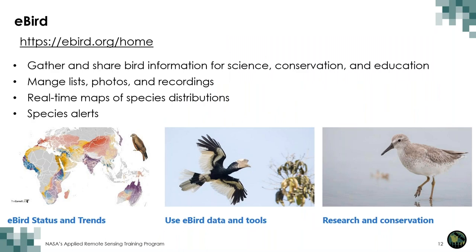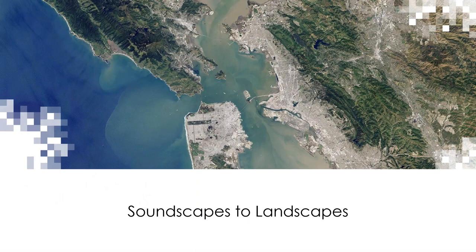eBird is among the world's largest biodiversity-related science projects, with more than 100 million bird sightings contributed annually by eBirders around the world. The goal is to gather and share bird information in the form of checklists and to provide power to new data-driven approaches to science, conservation, and education. You can also see videos and hear recordings of birds, see real-time maps of bird habitats, and subscribe to alerts when certain species have been seen. There are many tools available for citizen science around the world, and now we'll talk in more depth about a few specific projects.